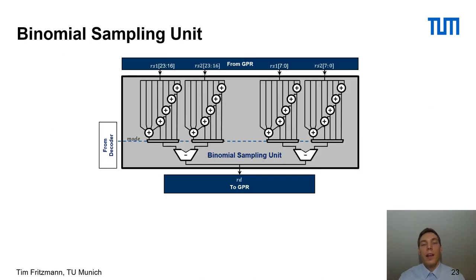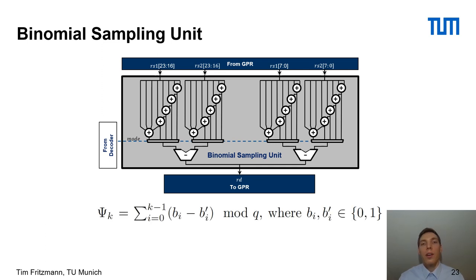The secret and error polynomials in RLWE-based schemes require binomially distributed samples. To convert a uniform sample into a binomial one, we use the equation computing the modular subtraction of the Hamming weights of k-bit integers B and B'. This is implemented by a circuit that computes Hamming weights for several values of k — where k depends on the parameter set of the post-quantum algorithm — and multiplexers that forward, depending on the mode signal, the respective Hamming weight to the modular subtractors.